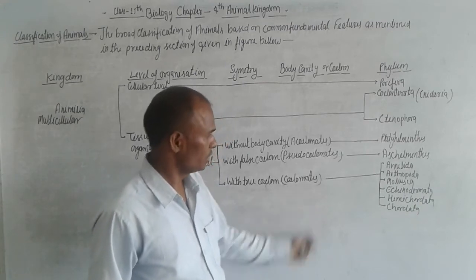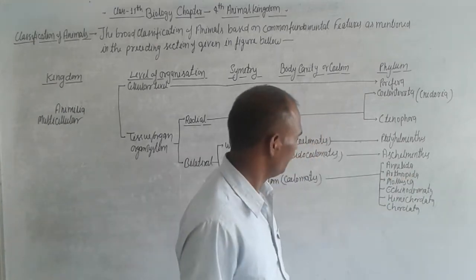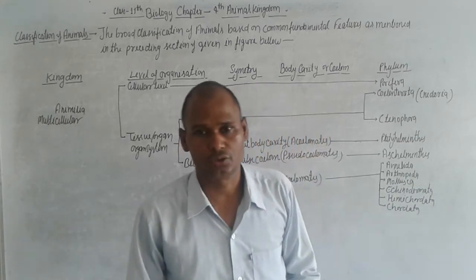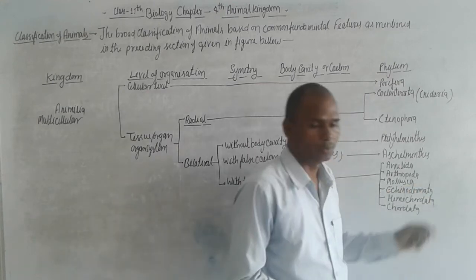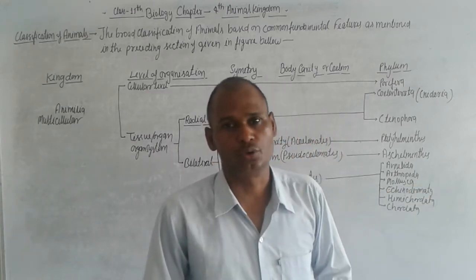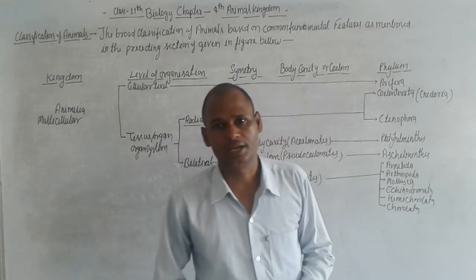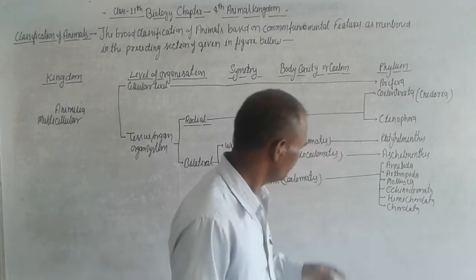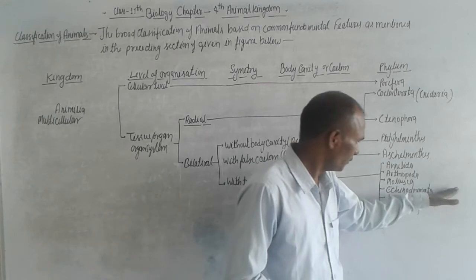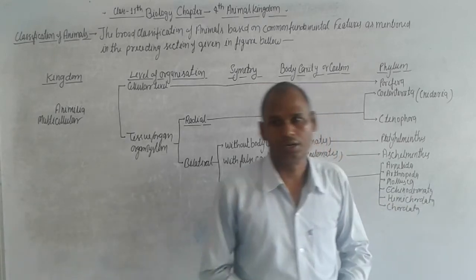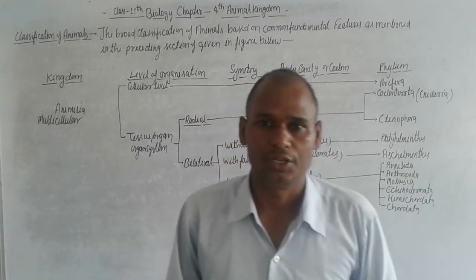So coelomates include Annelida like leech and Nereis, Arthropoda like mosquitoes and centipedes, Mollusca, Echinodermata like starfish, Hemichordata like Balanoglossus, and Chordata like human beings. These are the classification of animals.